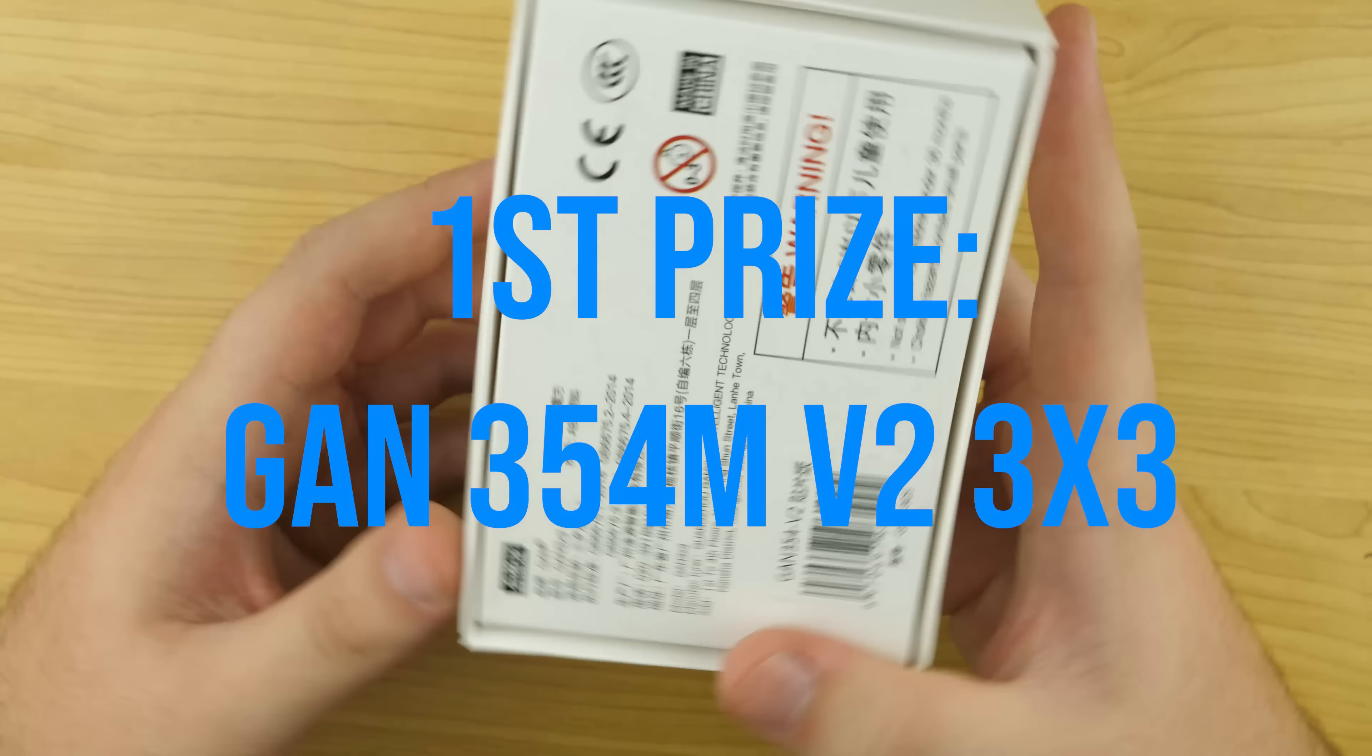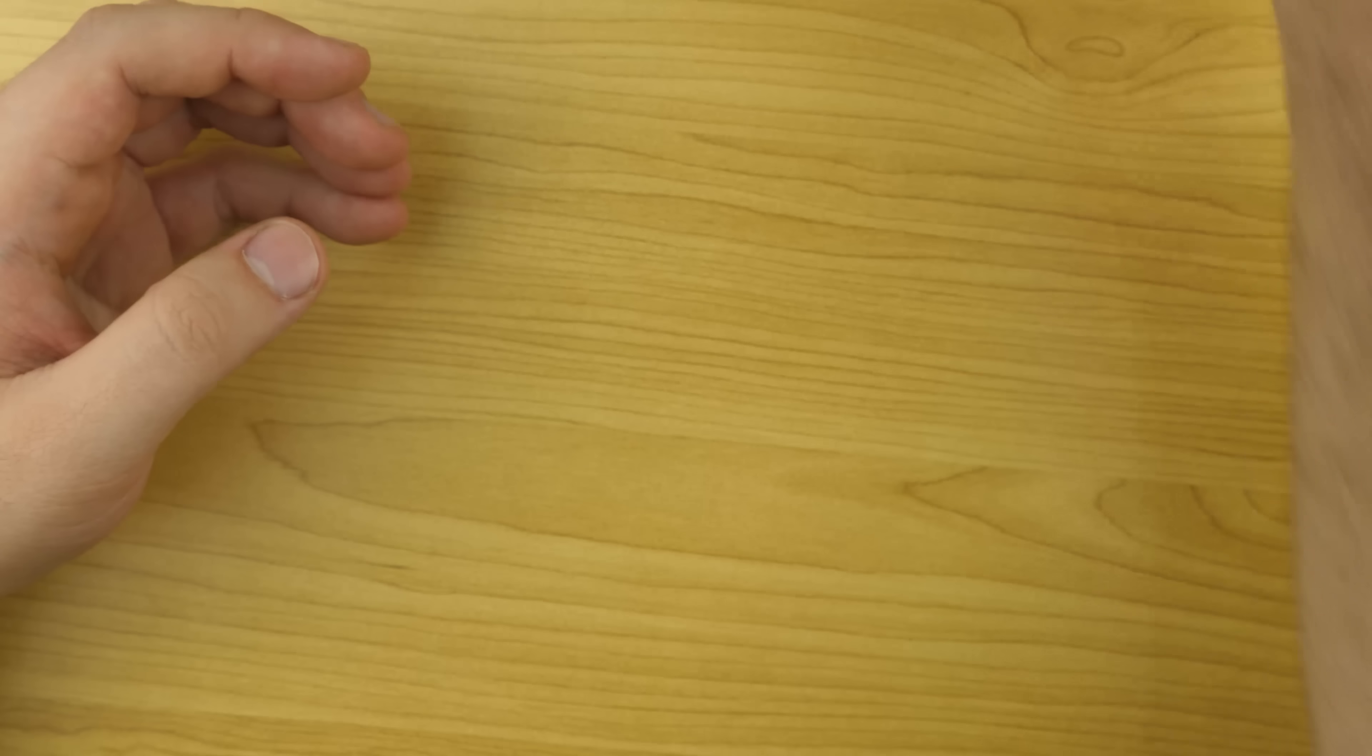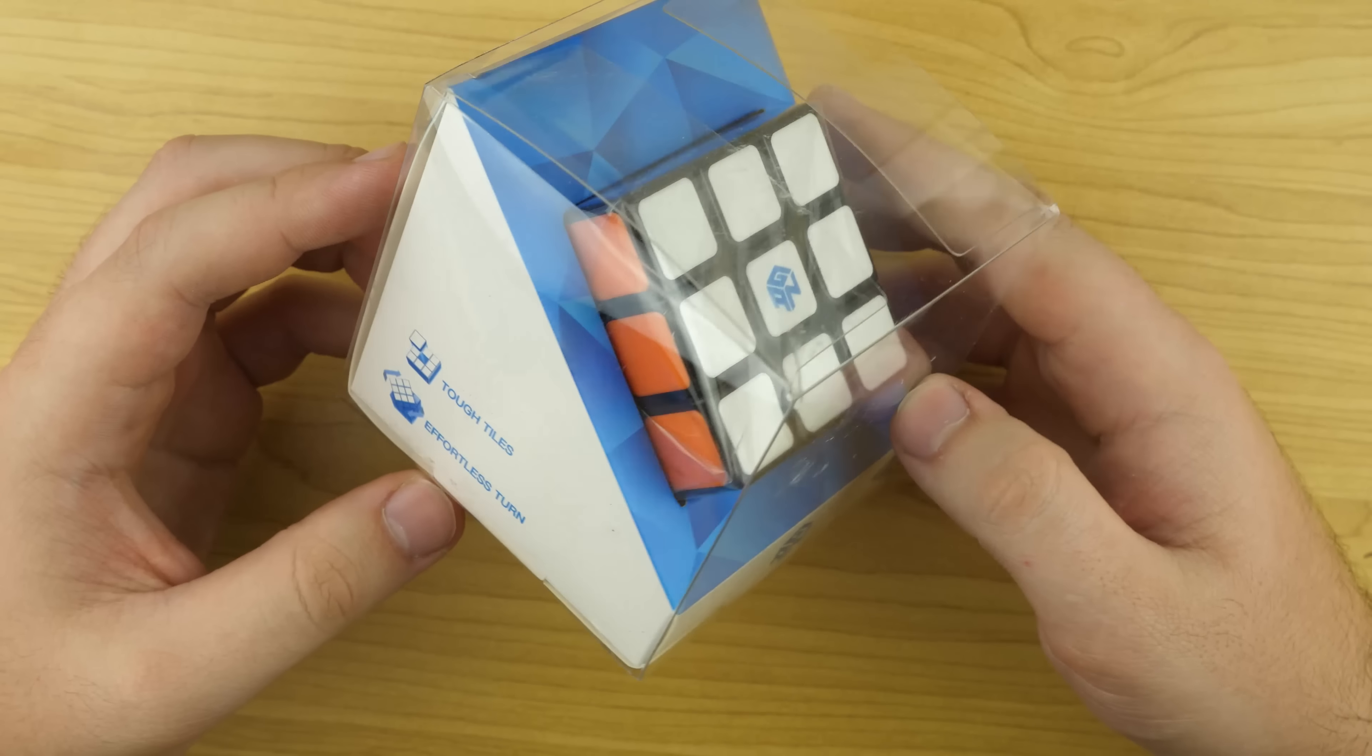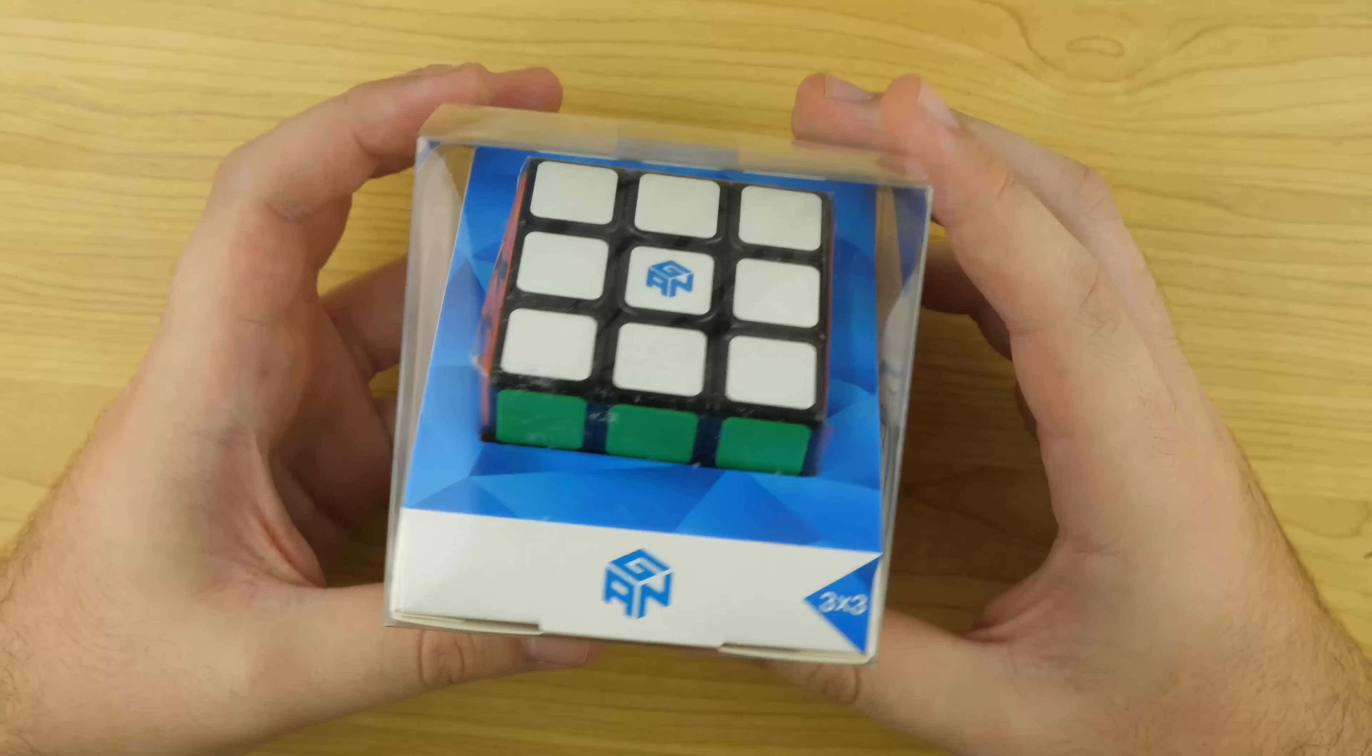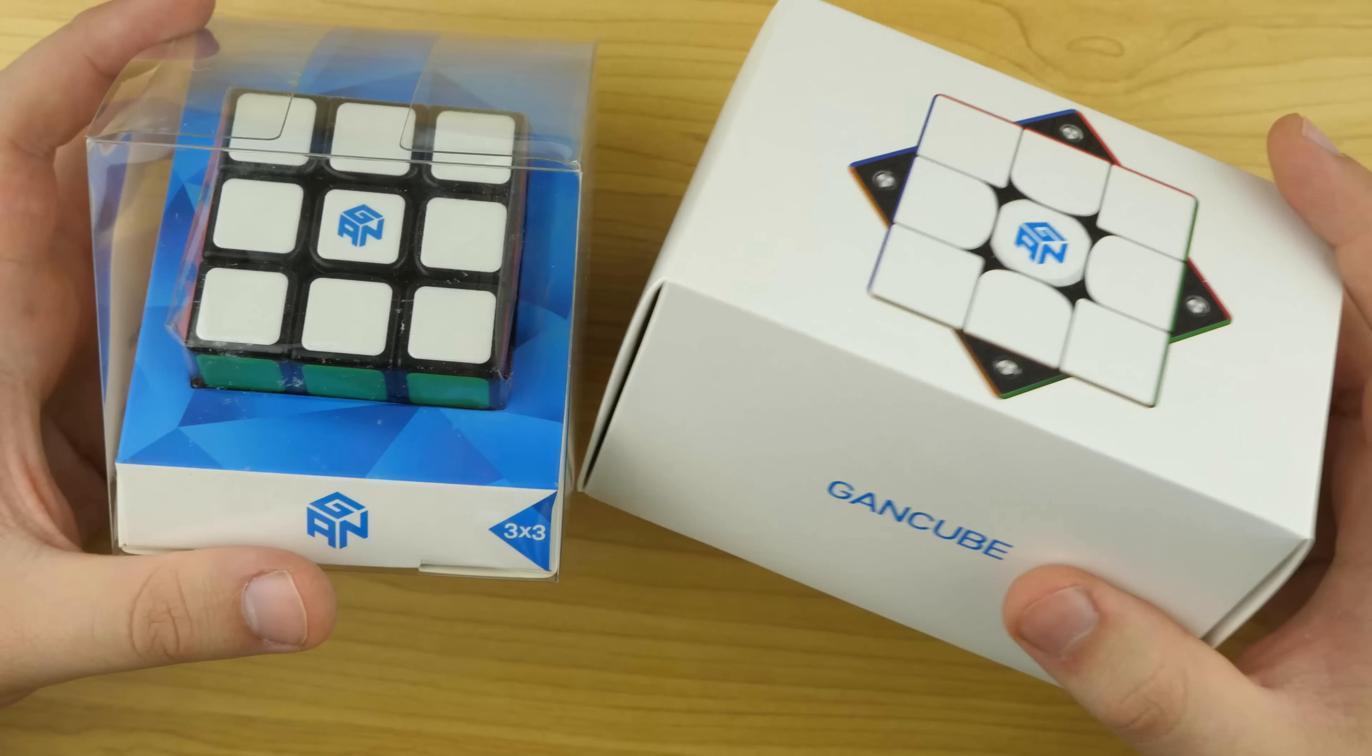So what are the prizes going to be? Number one, it's going to be the brand new GAN 354 version 2M. So the first place winner will be getting that. The second place winner will be getting the brand new GAN 3x3 tiled speed cube. This was formally branded as the Rubik speed cube, but I believe GAN is no longer working with them. And now this is just branded as the GAN tiled speed cube. So the second prize will be for that. And the third prize will be for a $25 gift voucher for our store.